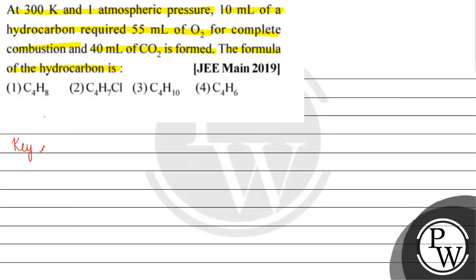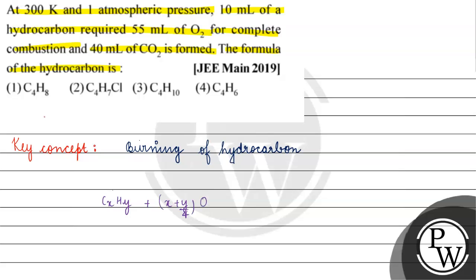The key concept for this question is burning of hydrocarbon. When we have burning of hydrocarbon, the reaction is: CₓHᵧ treated with oxygen gives x + y/4 moles of oxygen required, and forms x moles of carbon dioxide and y/2 moles of water.